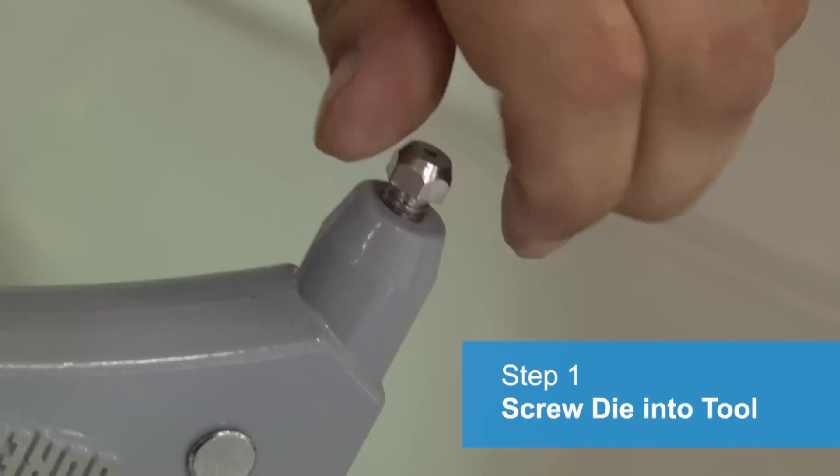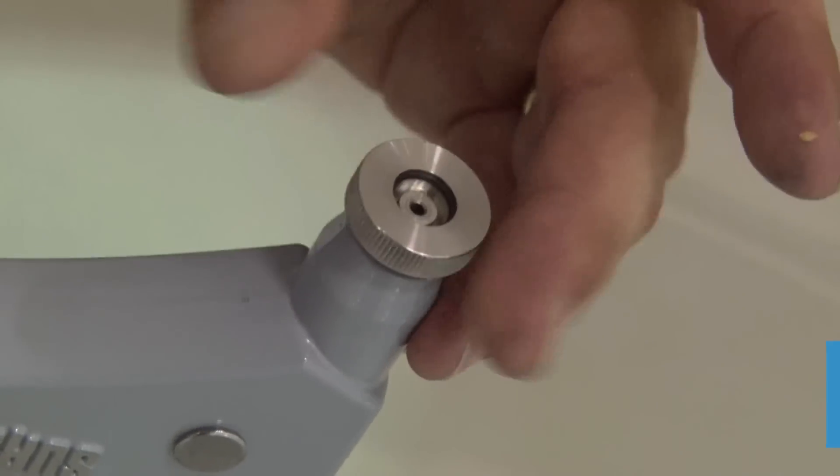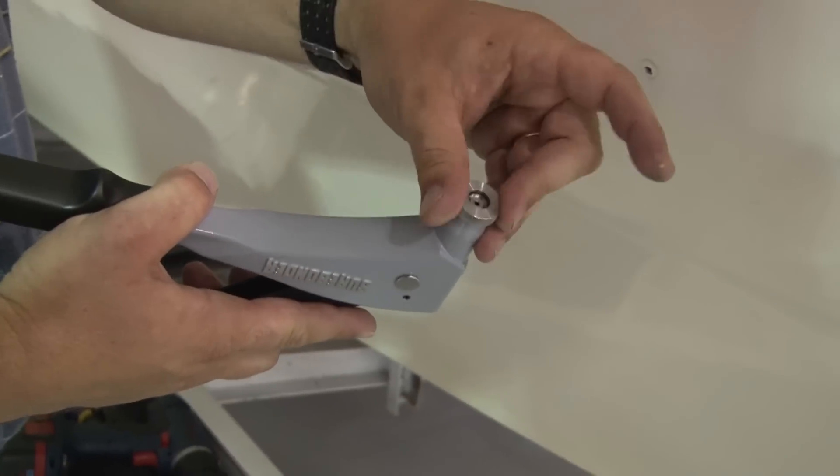Step 1: Replace the nose piece on your riveting tool with the new Snaprite Surface Mount Stud Die. It simply screws into place.